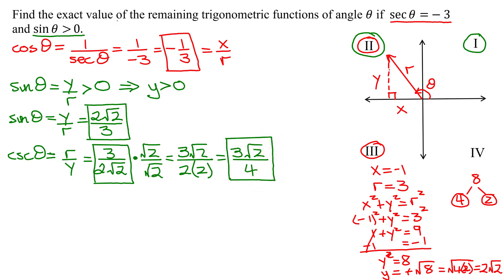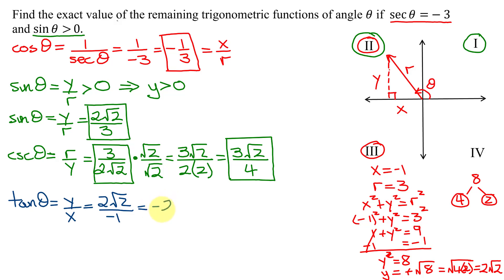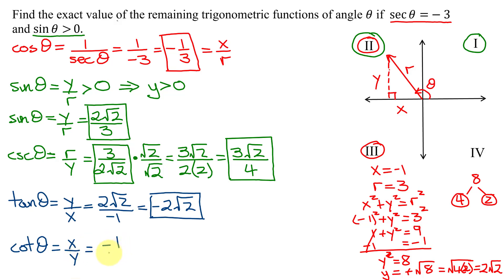Now all I have to do is find the tangent and the cotangent. The tangent of theta is y over x: y is 2√2 and x is negative 1. We never leave a negative in the denominator, so we write that as negative 2√2. Lastly, the cotangent of theta is the reciprocal of the tangent — x over y — which is negative 1 over 2√2.